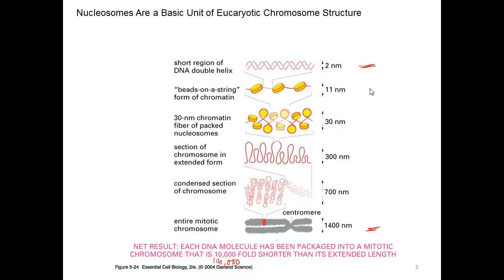We'll focus mostly on the top levels of organization, and in particular we'll be talking about the so-called bead-on-a-string level. In this view you can see that the red DNA is wrapped around the yellow proteins — those yellow proteins are the histone proteins that we were talking about, and this picture is reasonably to scale. Approximately 150 base pairs of DNA winds around the histone proteins about twice and is separated by about 80 base pairs from other histones.